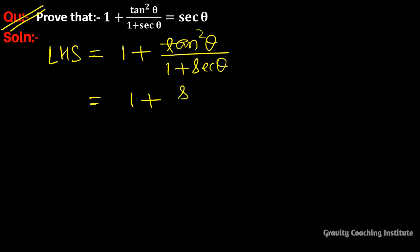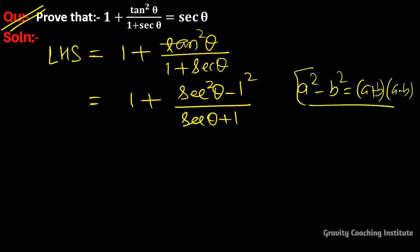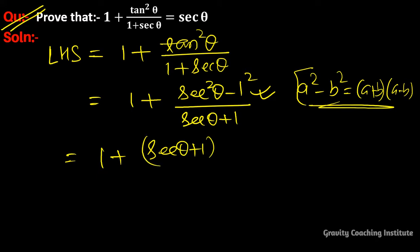We know that the formula tan²θ = sec²θ - 1, so we substitute that. We use the algebraic identity a² - b² = (a + b)(a - b), so we have (secθ + 1)(secθ - 1) in the numerator.